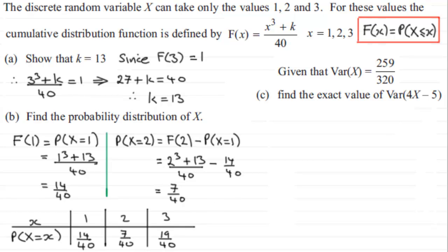Now for Part C, we're given that the variance of X is equal to 259 over 320. And we've got to find the exact value then of the variance of 4X minus 5. And to do this, it relies on this principle.